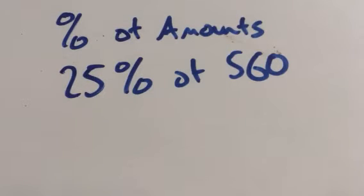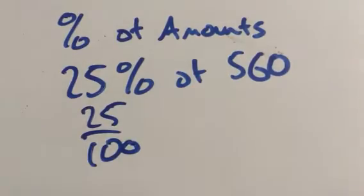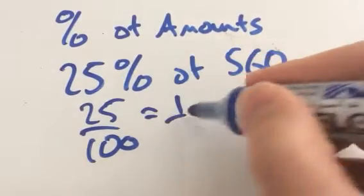The first one here is 25% of 560. What do I do? We do 25 over 100, because that's what percent means. That is the same as a quarter. So we've got our equivalent fractions there.